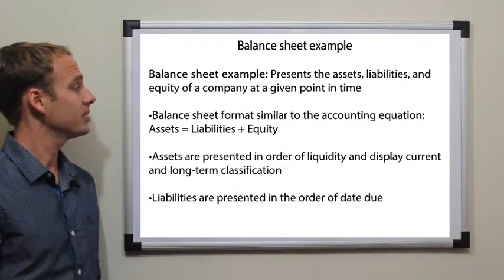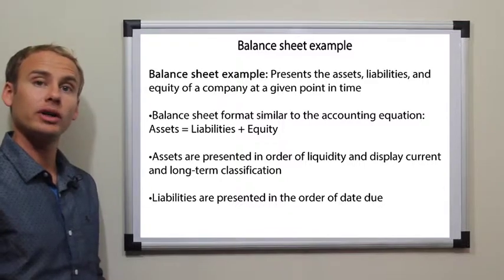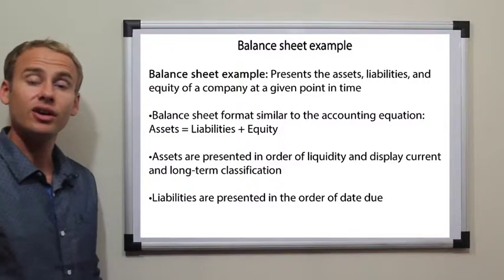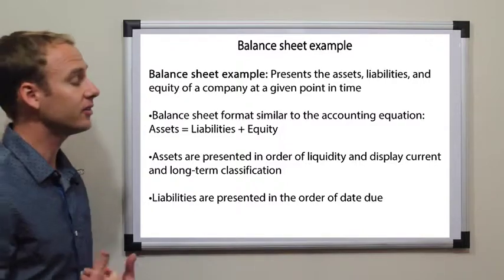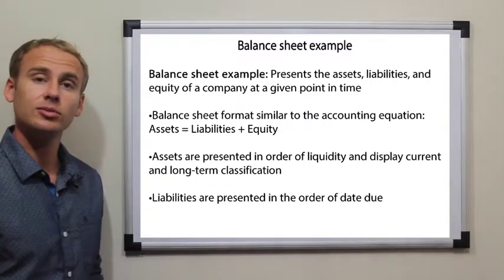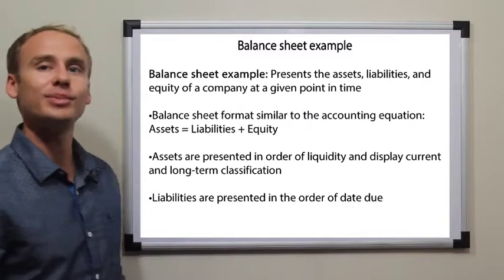Liabilities are presented in the order of due date, also in current or long term classifications. This usually hovers around a year or so, but if there's a very unique business, what is current to one business in the long term can occasionally be different, just as a cruise ship might take multiple years to build out a ship.